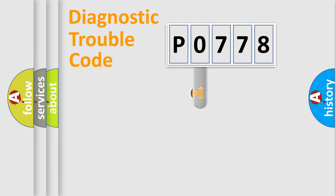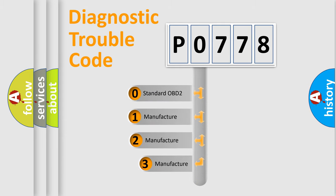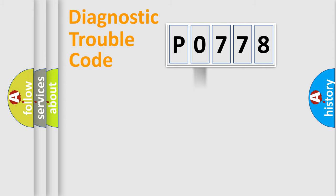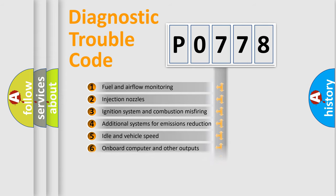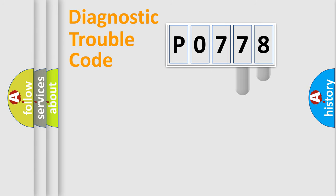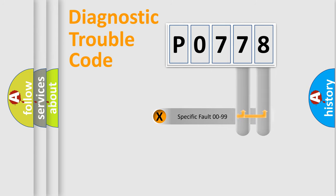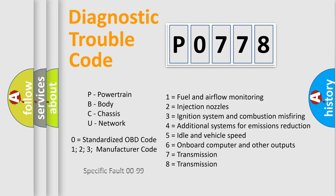This distribution is defined in the first character of the code. If the second character is expressed as zero, it is a standardized error. In the case of numbers 1, 2, or 3, it is a manufacturer-specific error. The third character specifies a subset of errors. Only the last two characters define the specific fault of the group, and this division is valid only when the second character is zero.